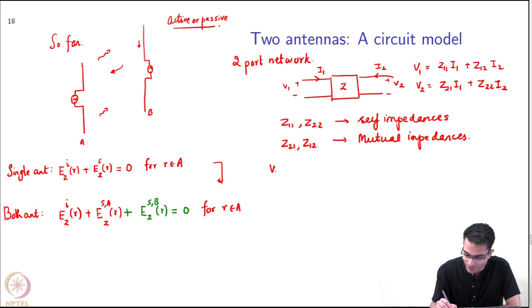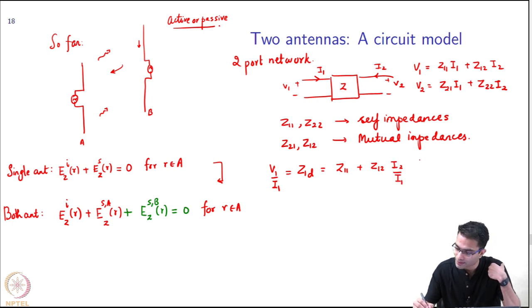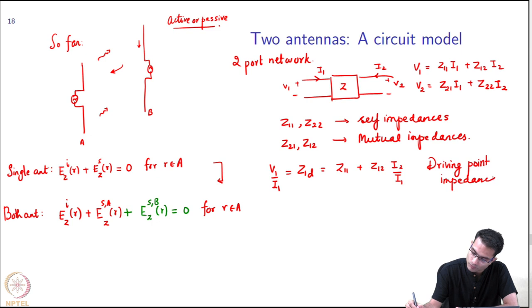That is V_1 by I_1 at port 1, that is the impedance. That is going to be Z_1D - I will tell you what D stands for - and that is going to be equal to Z_11 + Z_12*(I_2/I_1). And the Z_1T is called the driving point impedance. Similarly, V_2/I_2 will be the Z_2D, which will be Z_21*(I_1/I_2) + Z_22.